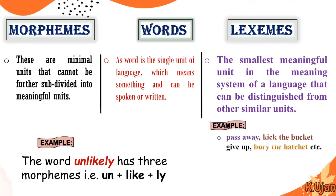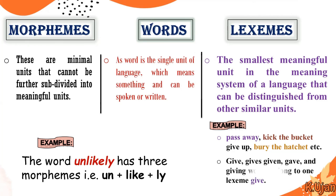Examples of lexemes include give up, pass away, and kick the bucket. Pass away has two words but a single meaning: to die. Kick the bucket has three words but a single meaning in the language system — it also means to die. Give up means to leave things. These chunks, whether phrases or idioms, carry a single meaning, making them lexemes. Similarly, the words give, gives, given, gave, and giving all belong to one lexeme, give, because they share a single meaning in the meaning system of the language.